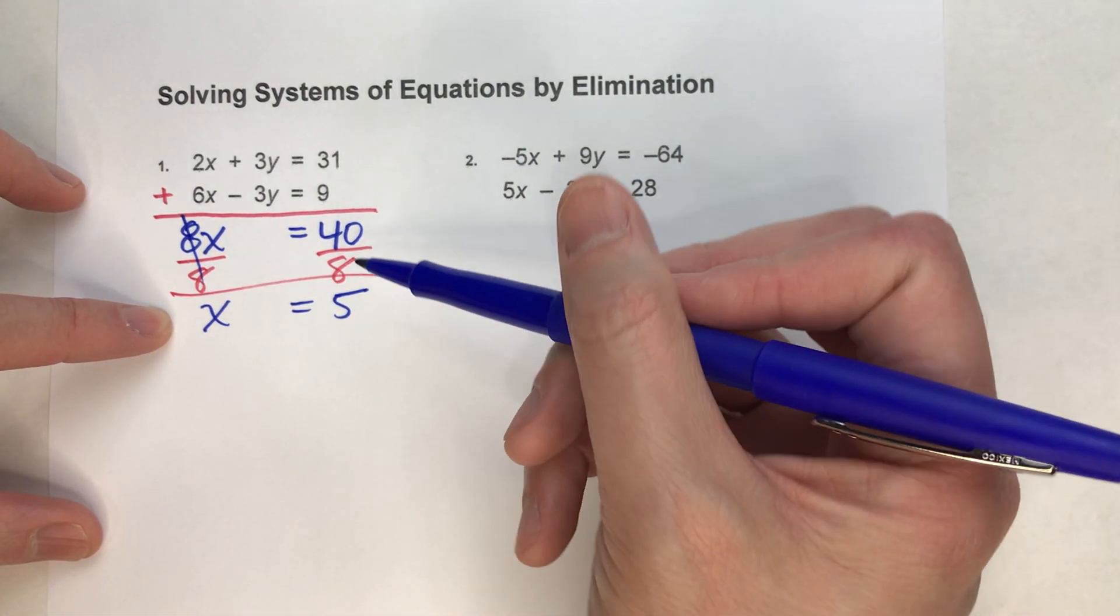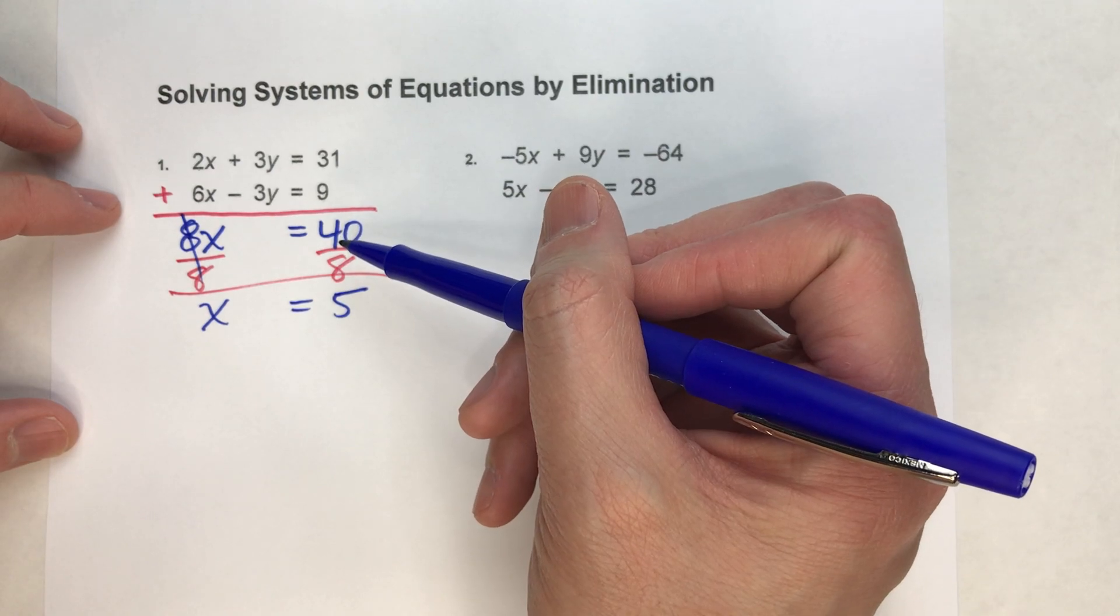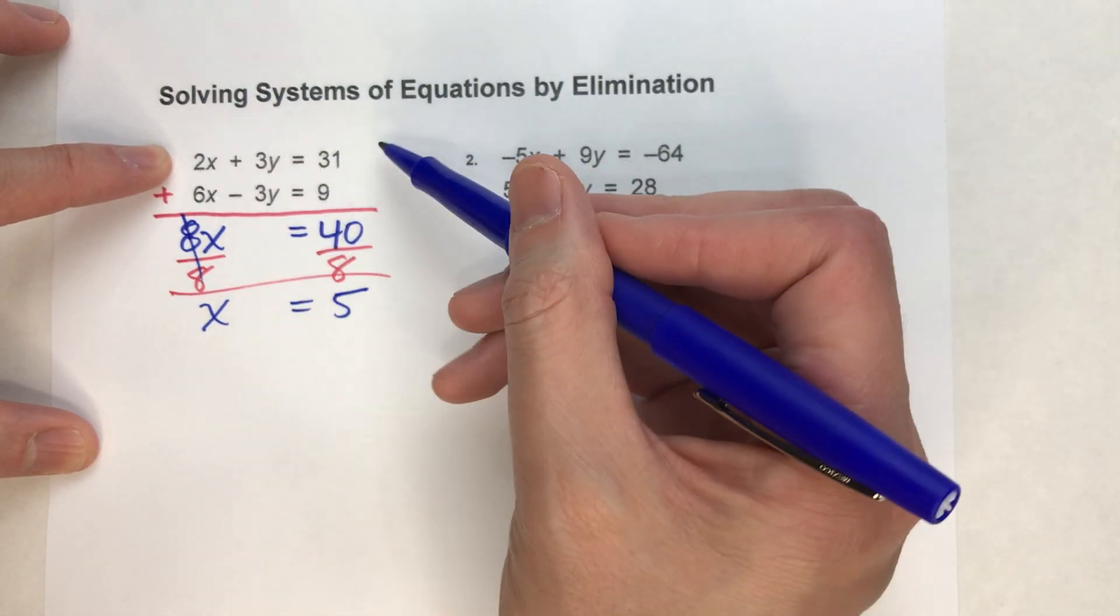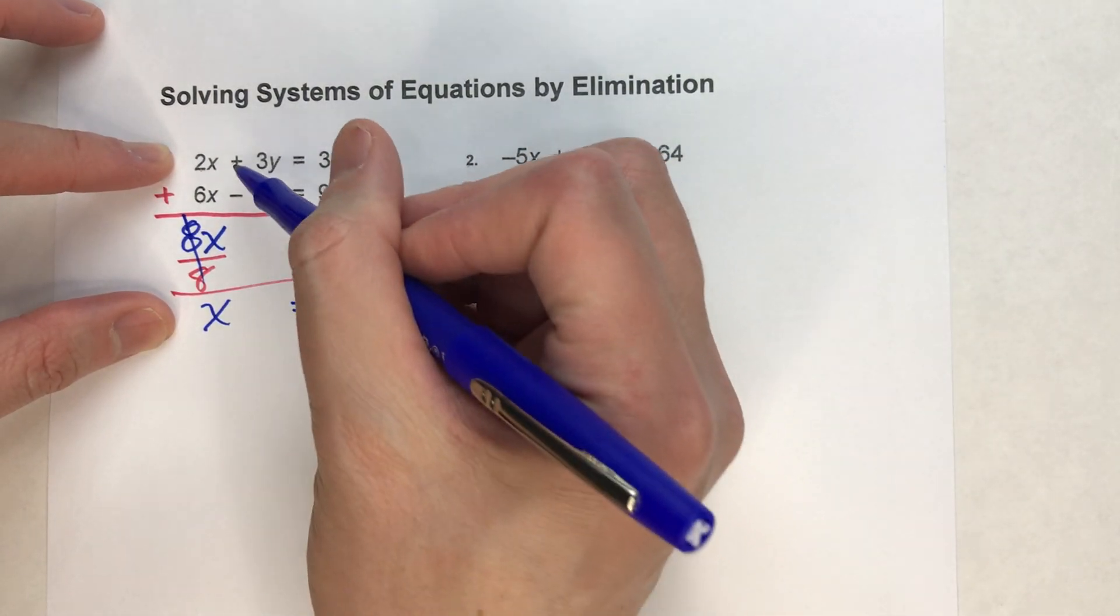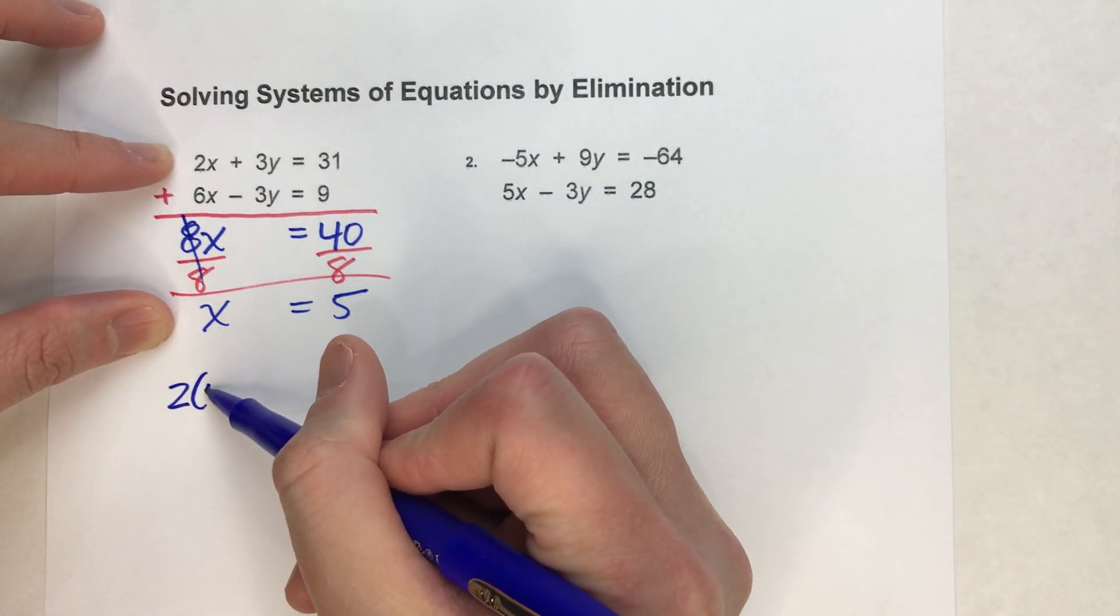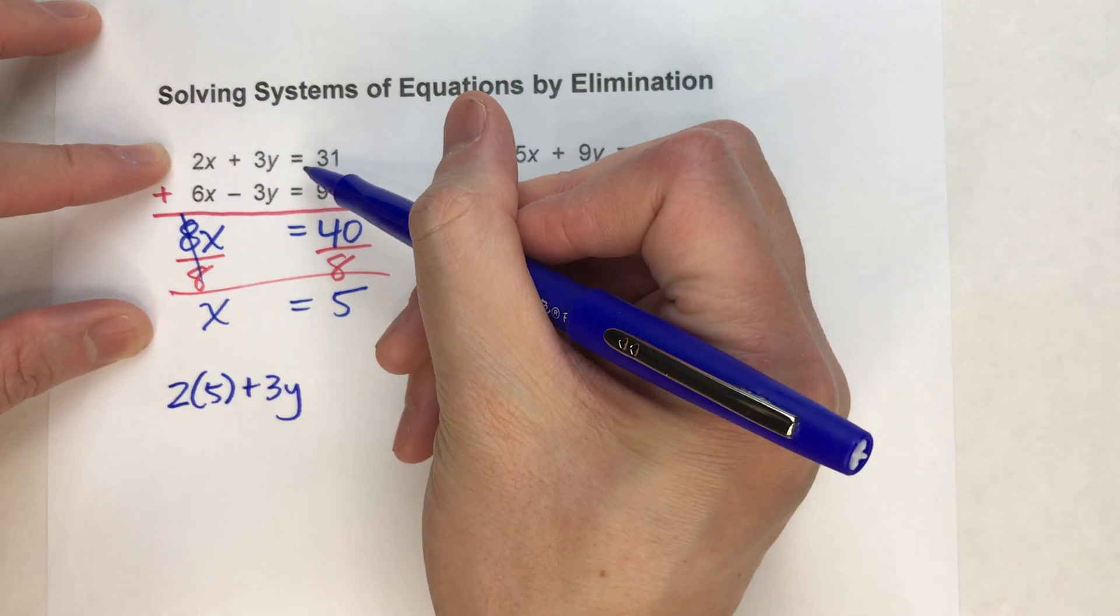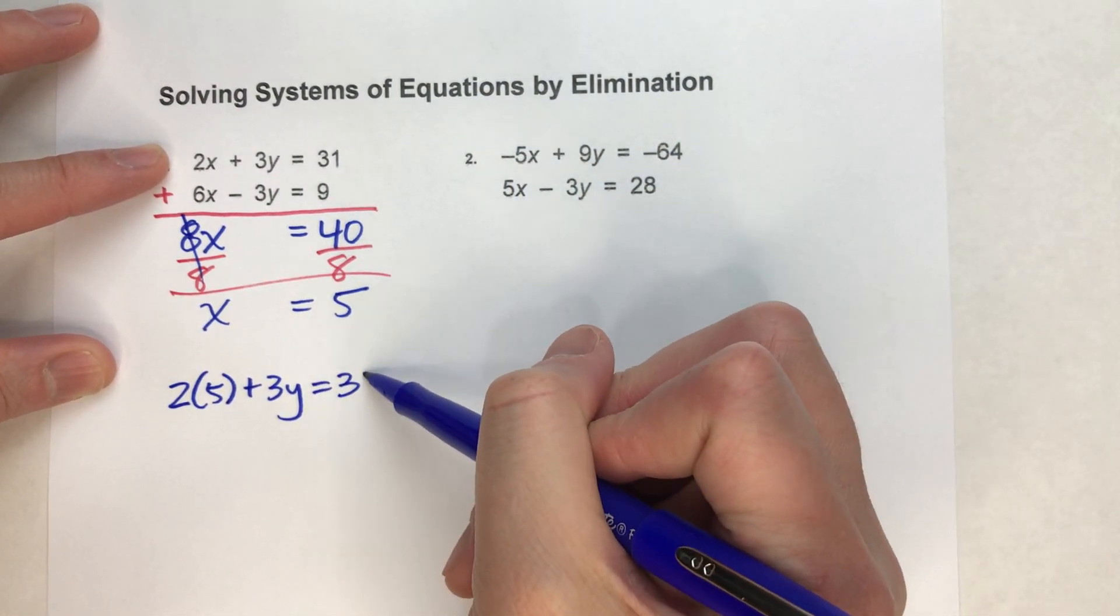Now, to figure out what y is, I've got to take my x value and put it back into one of my original equations. I'm going to take the top one since it's all positive numbers. So we've got 2 times 5 plus 3y equals 31.